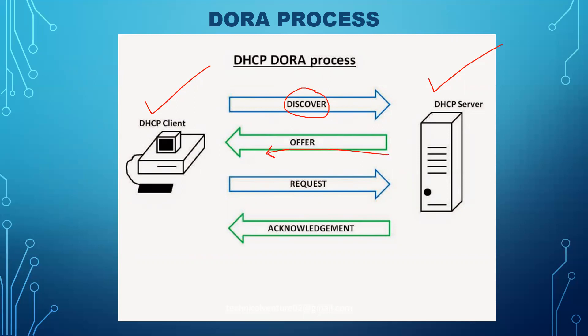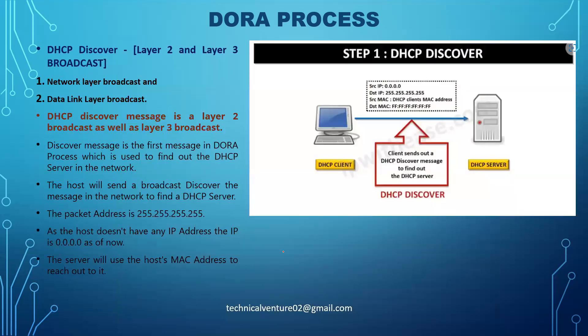The DHCP server will offer available IP addresses once it receives the Discover request. The client machine will then request a specific IP address, and the DHCP server will acknowledge that request, assigning the IP address, subnet mask, and all other details to the client machine. Let's check the source IP, destination IP, source MAC, and destination MAC in the first message — the DHCP Discover.